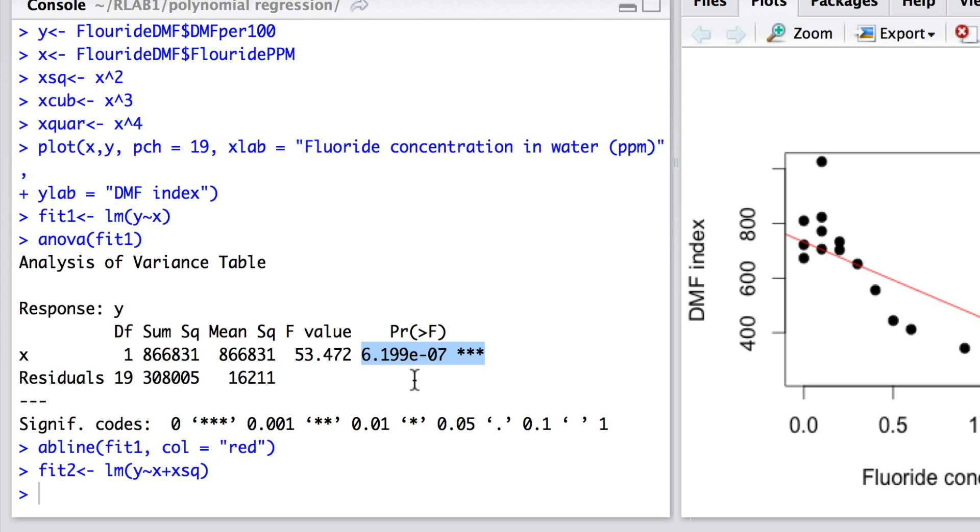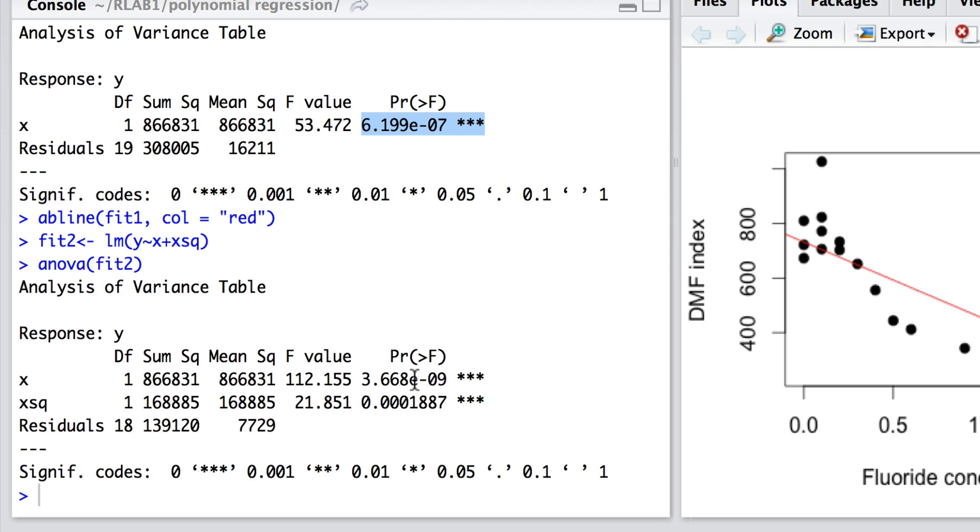And likewise, we can look at the analysis of variance breakdown of this model. This is what we get here. So with a Type 1 sum of squares, we know that x explains significant variability in y.